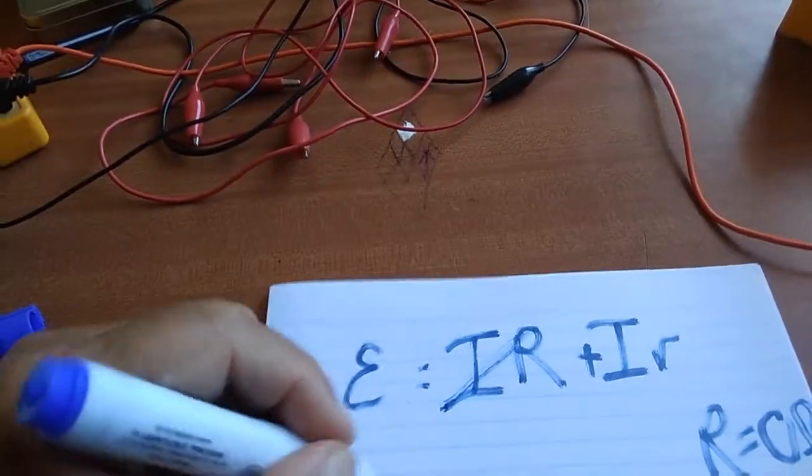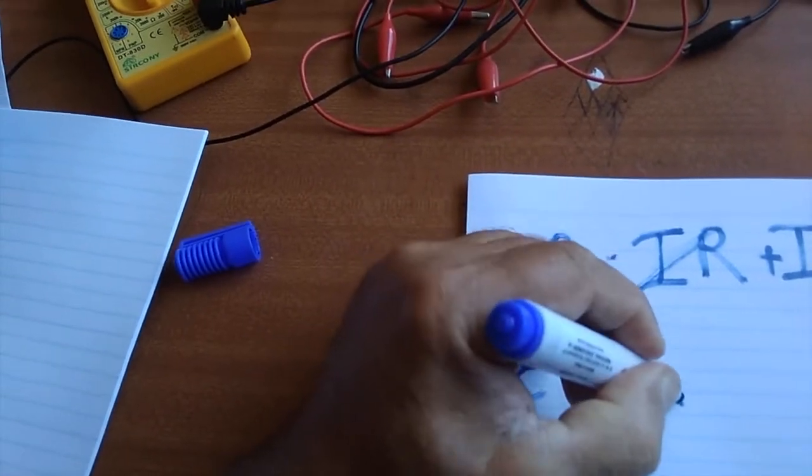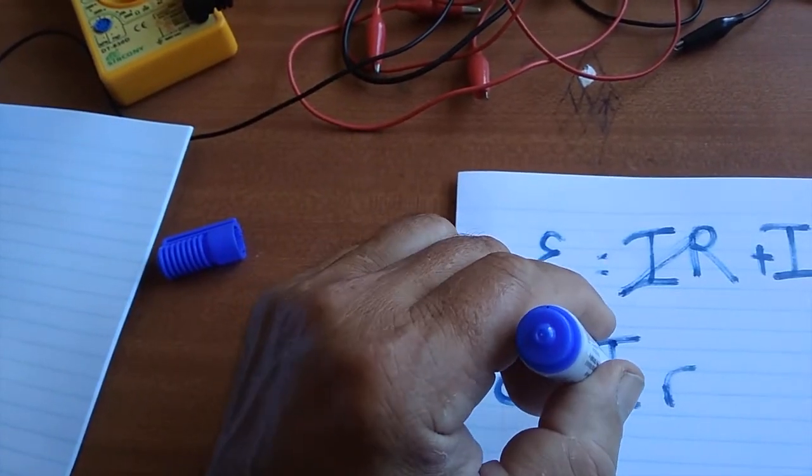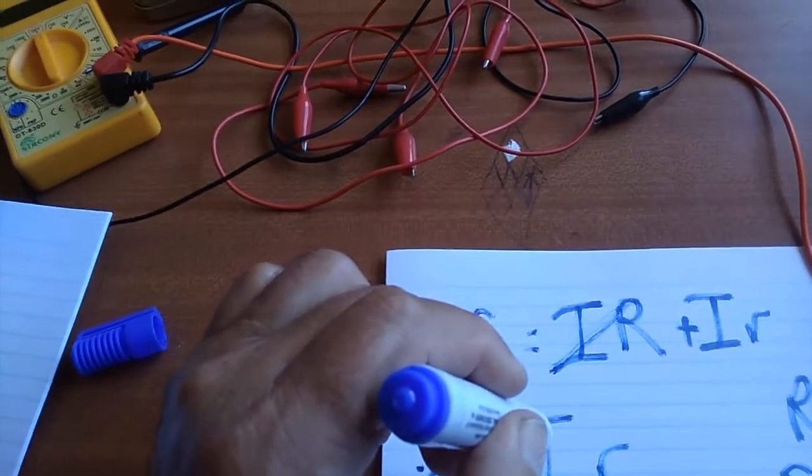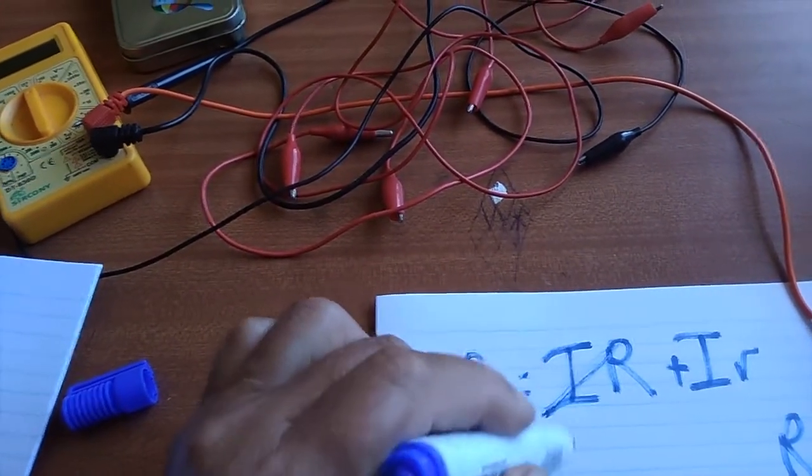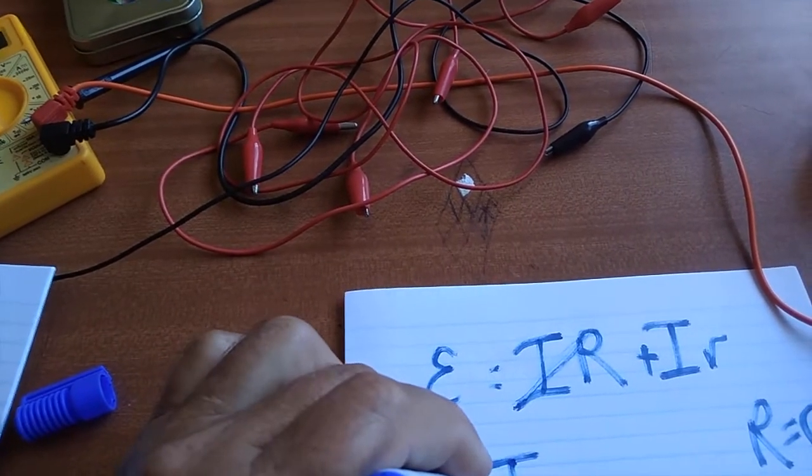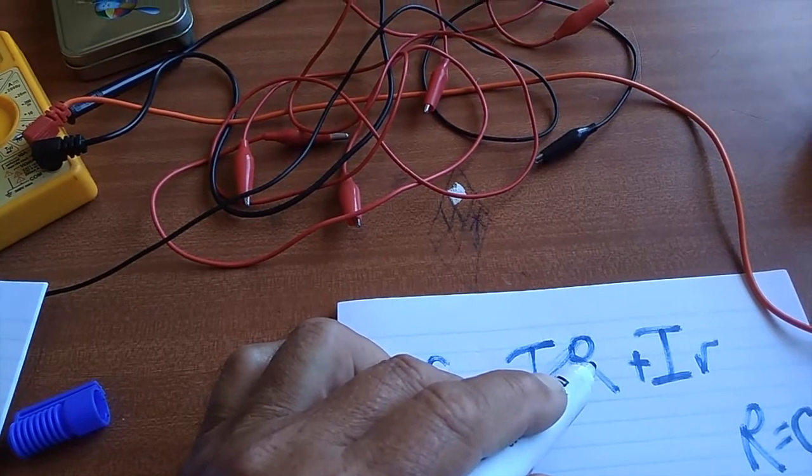So our formula is going to change to E equals I little r. That's when the voltage and current are going to be at maximum because the resistance is going to be zero. So all we need to find for internal resistance is when is the voltage maximum, when is the current maximum, and the current is maximum when there's no external resistance. So we're going to have a short circuit.